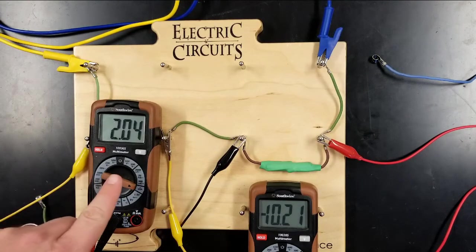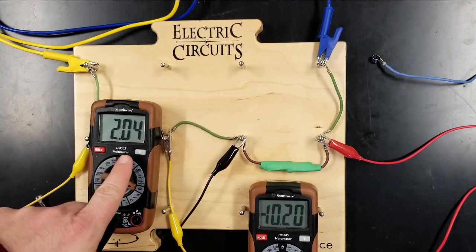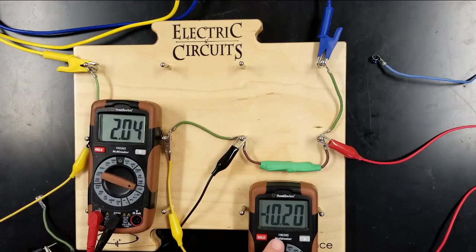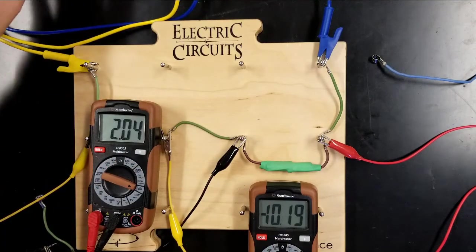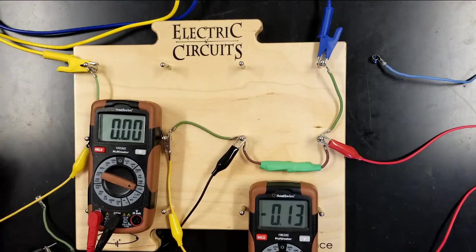And then this is the highest setting. My highest current was 2.04 amperes at a voltage of 10.2 volts. So I'm going to go ahead and turn that off.